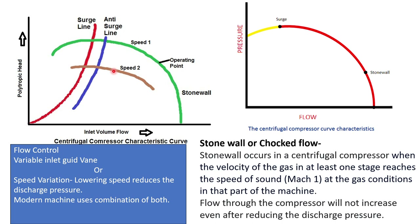Flow can be controlled by inlet guide vanes or by speed variation — lowering the speed is an economical method, but it also reduces discharge pressure, which may not always be acceptable. As shown in the graph, reducing speed also reduces pressure. Most modern machines use a combination of both flow control and speed variation.